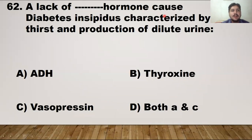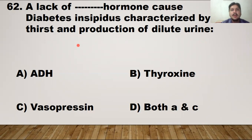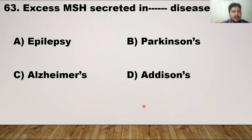MCQ number 62: a lack of which hormone causes diabetes insipidus, characterized by great thirst and production of dilute urine? This happens when anti-diuretic hormone — also called vasopressin — is reduced. Vasopressin controls the concentration of water in the body; when reduced, water is lost through diluted urine. The right answer is both ADH and vasopressin.